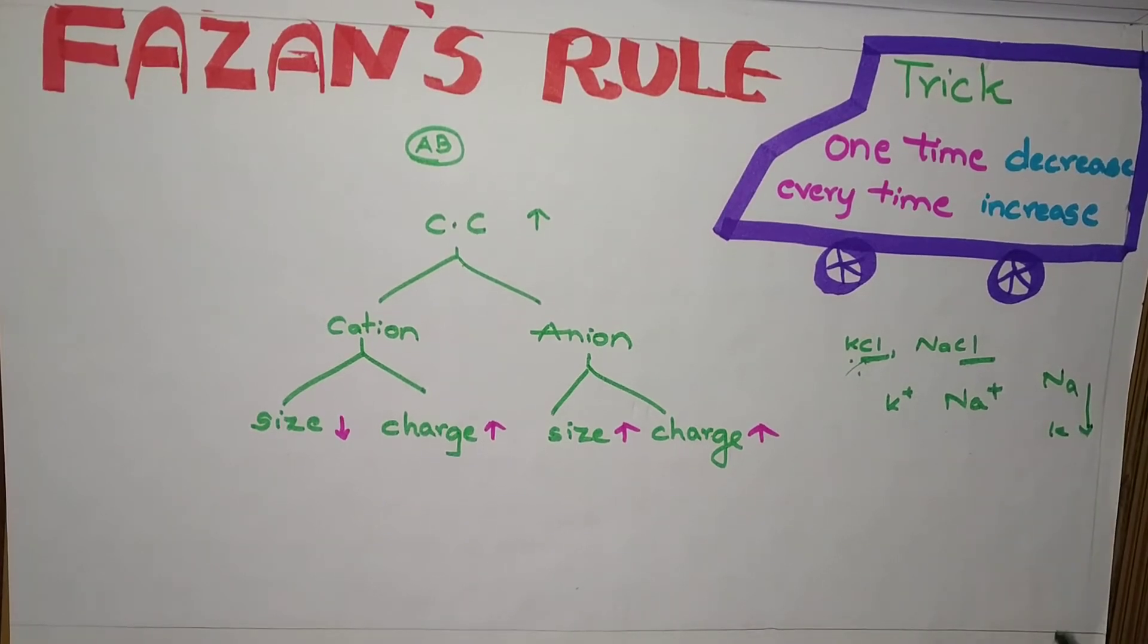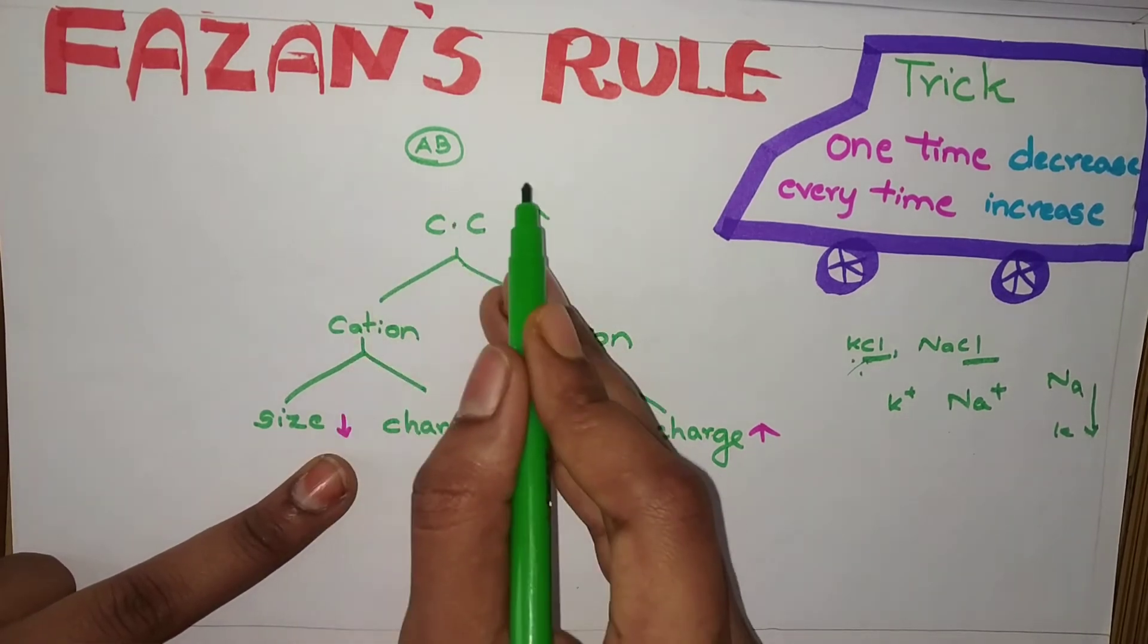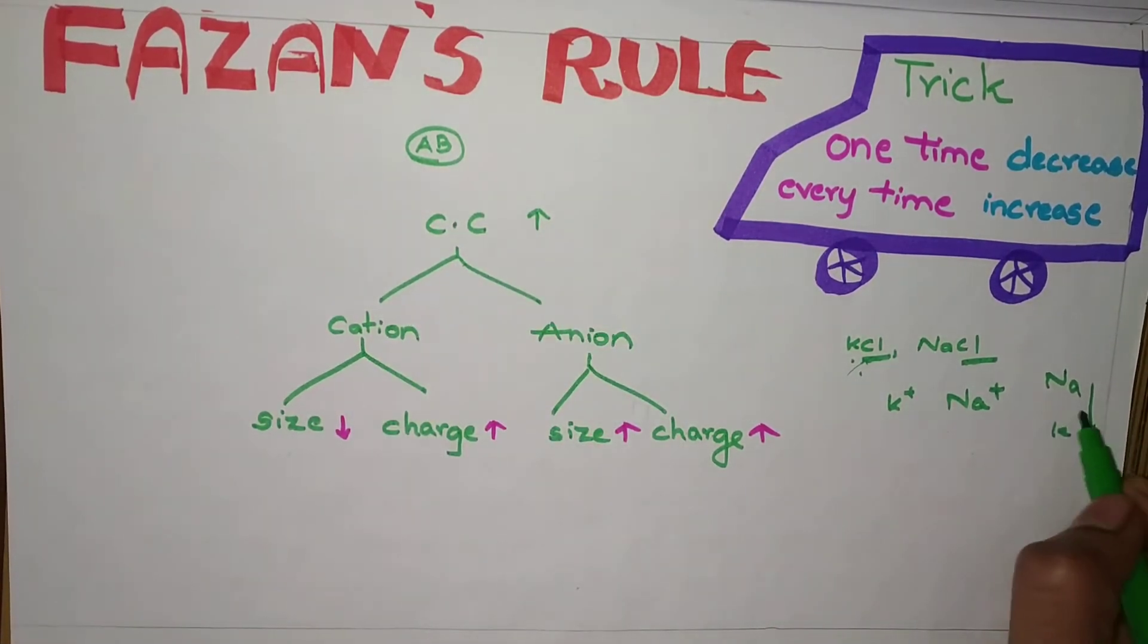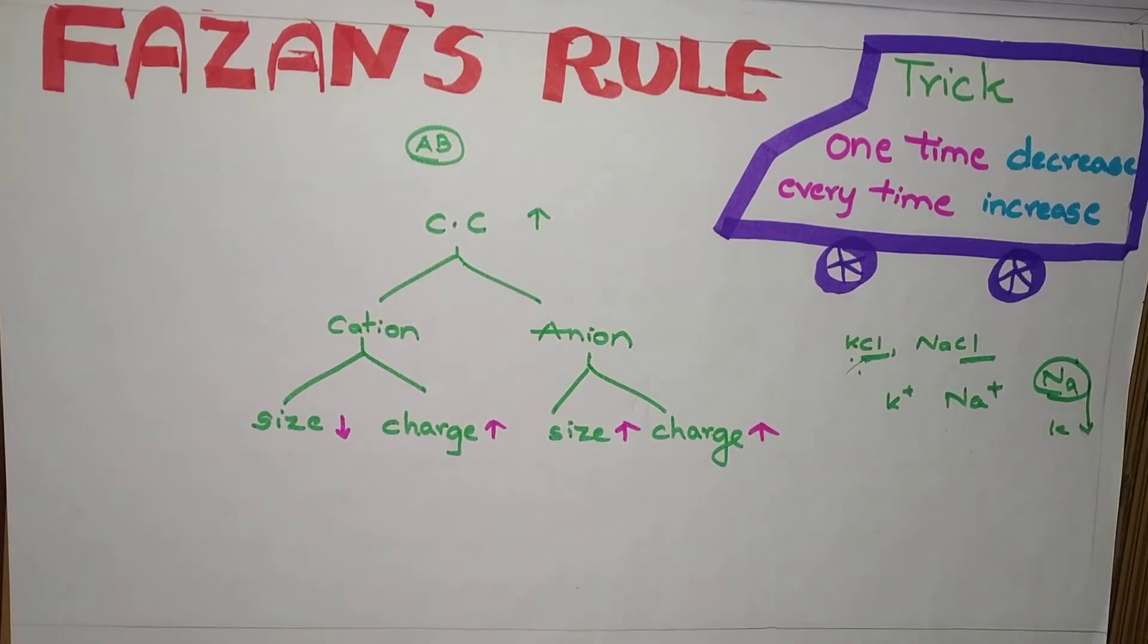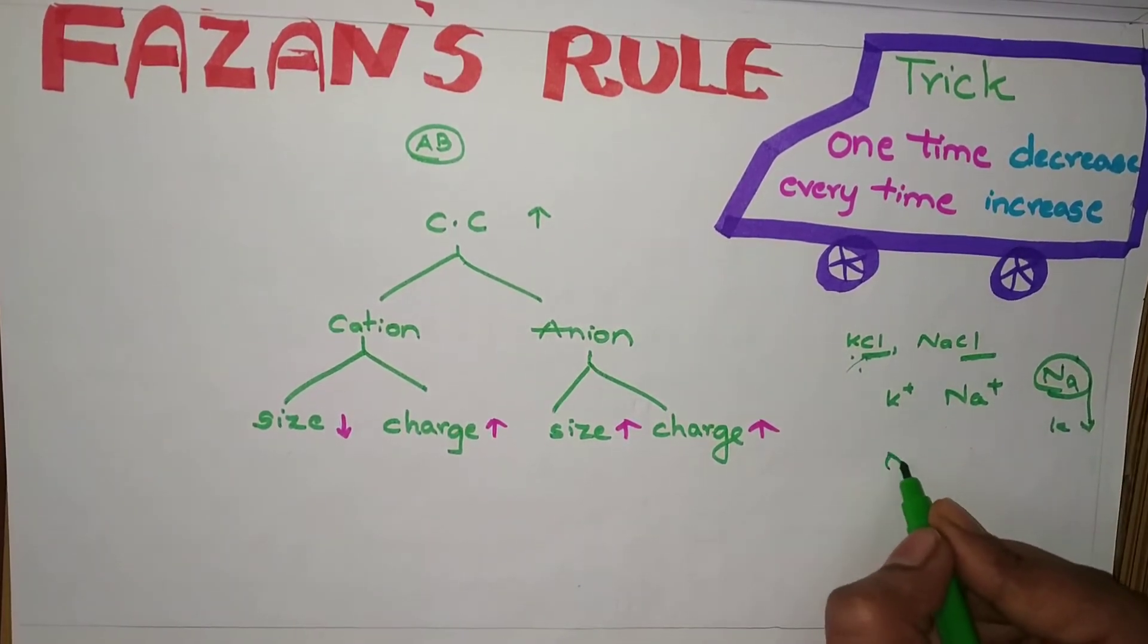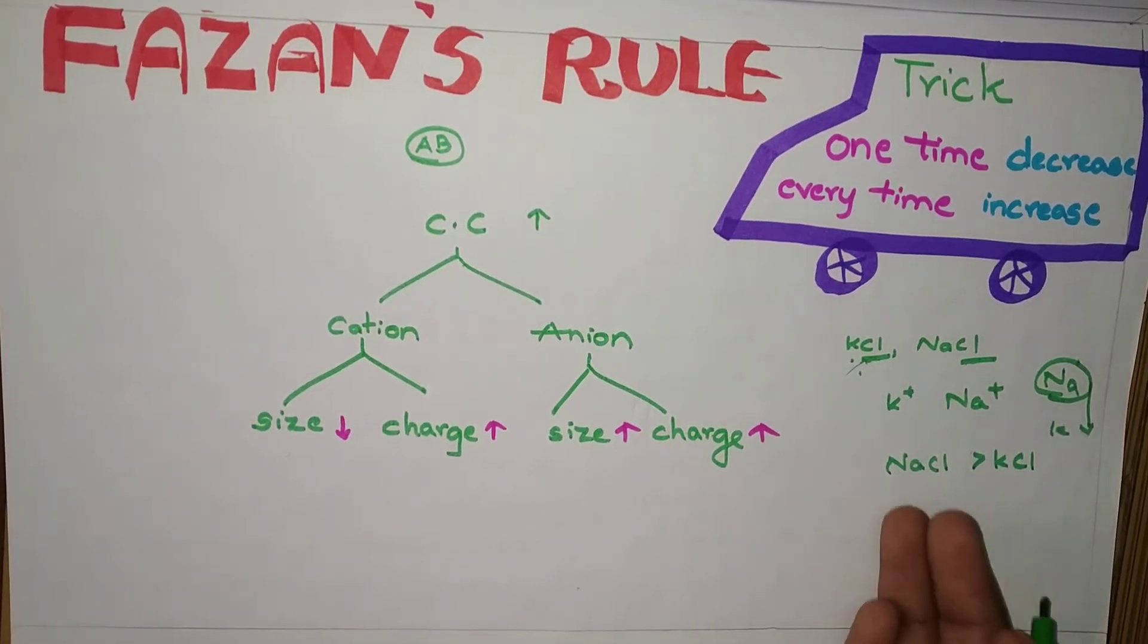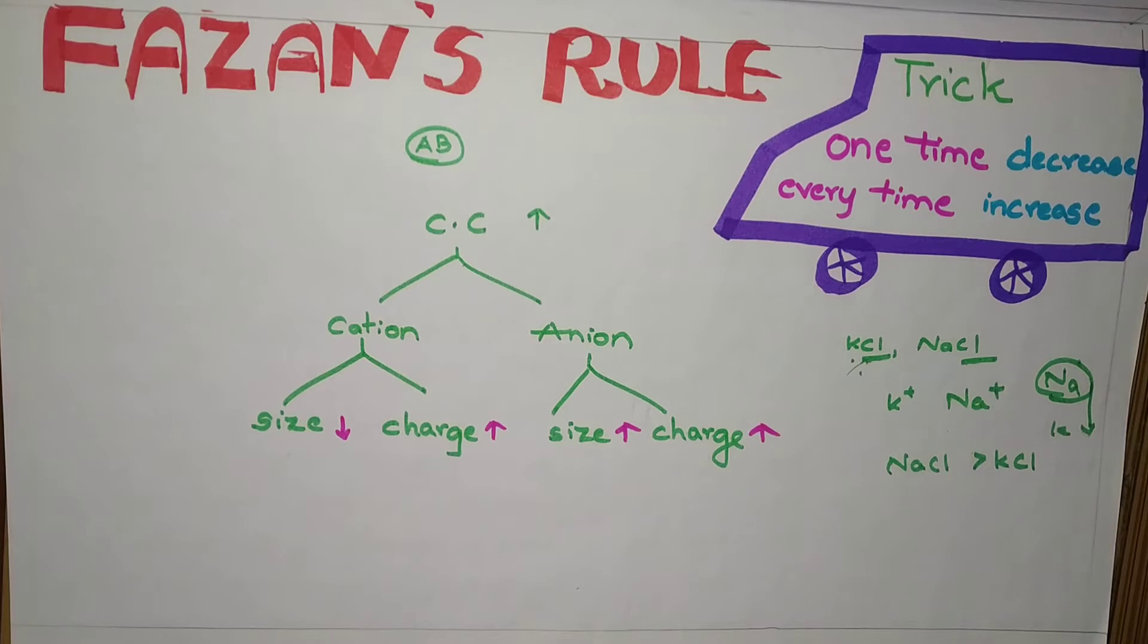To have more covalent character, size should be less. Here, which size is less? This one size is less. So NaCl is more covalent than KCl. It means it has more covalent character. That's it. In this way, you have to find.